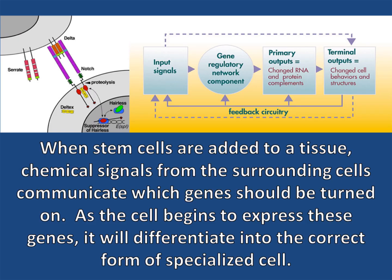When stem cells are added to a tissue, chemical signals from the surrounding cells communicate which genes should be turned on. As the cell begins to express these genes, it will differentiate into the correct form of specialized cell.